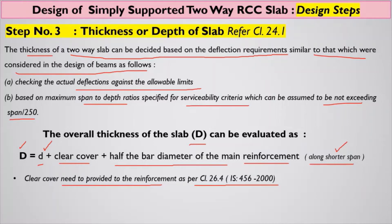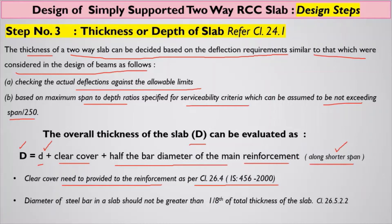Another guideline is that the maximum diameter of the steel bar should not be greater than one-eighth of the total (overall) thickness of the slab. This is referenced in Clause 26.5.2.2.